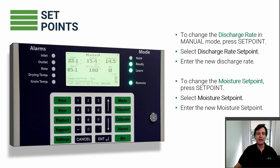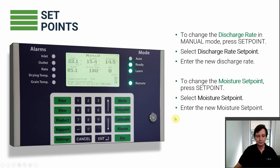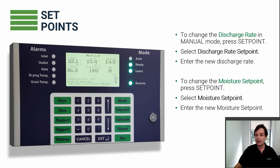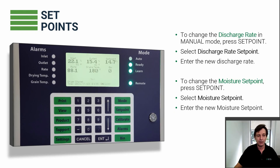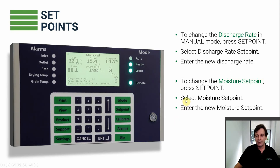You're in manual and want to change the speed. Press the Set Point key — you have two options: discharge rate or moisture set point. Select discharge rate and enter the new value. To change the moisture set point, press Set Point again, choose moisture set point, and enter a new value — here we change it from 14.5 to 14.7. Very easy: one button, pick the right option, and enter your value.